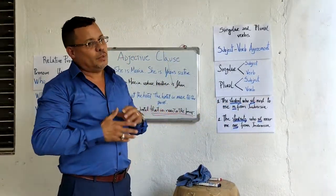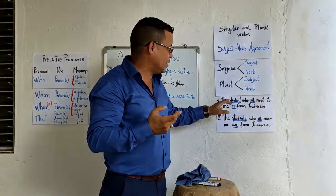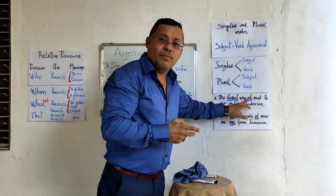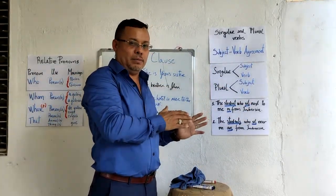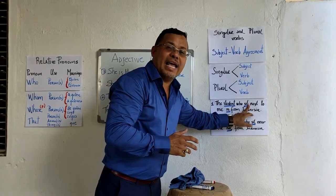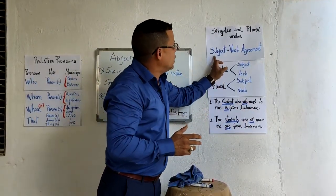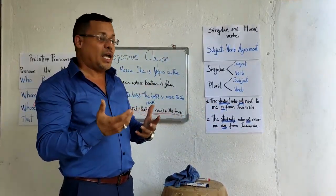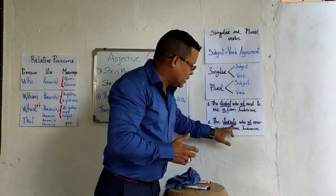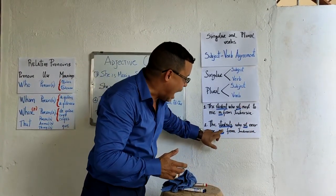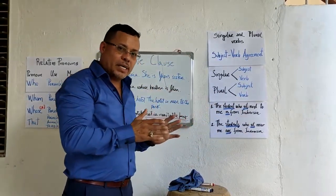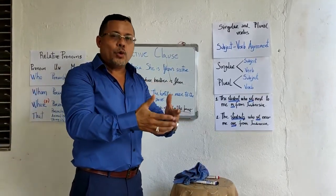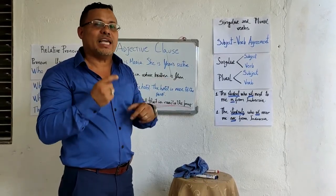Did you see the problem? Because 'student' is third person singular, 'is' is the correct verb form, and 'sits' also takes an S for subject-verb agreement. So we say: 'The student who sits next to me is from Indonesia.' And in the plural form: 'The students who sit near me are from Indonesia.' Remember that the verb in an adjective clause should agree with the number of the noun it modifies.